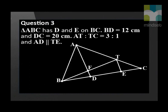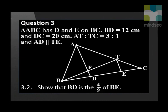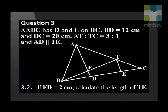In the figure, triangle ABC has D and E on BC. BD is equal to 12 cm and DC is equal to 20 cm. AT to TC is equal to 3 is to 1, and AD is parallel to TE. Write down the numerical value of ED over CE. Show that BD is 4 ninths of BE. If FD is equal to 2 cm, calculate the length of TE.